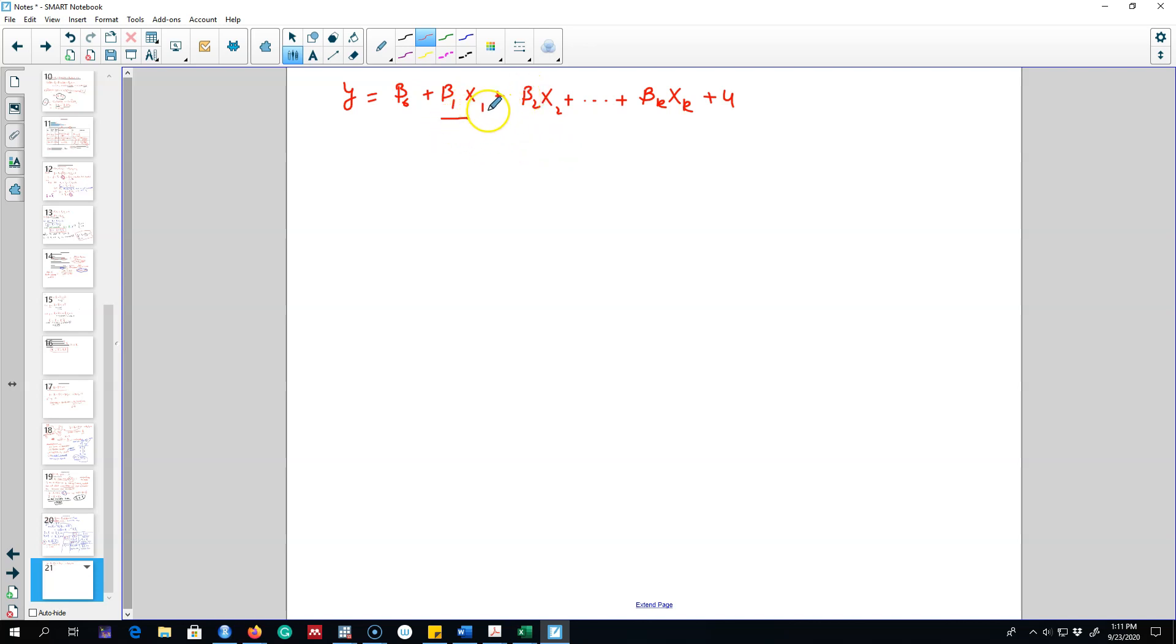For example, in this case beta 1 shows what will be the impact of x1 on y, ceteris paribus - that is holding all these variables constant. So in nutshell, what we are talking about here is these beta coefficients show the average effect of that x variable on y variable.